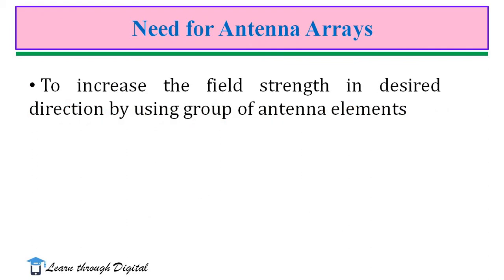Why do we go for antenna arrays? The field irradiated by a small linear antenna is not distributed uniformly in the direction perpendicular to the axis of the antenna. As in the case of the short dipole, the maximum radiation takes place in the direction at right angles to the axis of the dipole. Such non-uniform radiation characteristics may be used for many broadcast services, but such characteristics are not preferred for point-to-point communication. In point-to-point communication, it is desired to have most of the energy radiated in one particular direction.